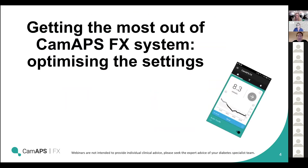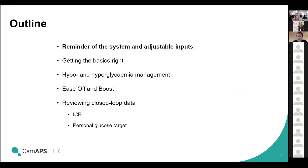For tonight's webinar we're looking at how to get the most out of the CAM APS FX system and closed loop systems, really looking at optimising settings. In the previous webinars we've looked at how it works and a bit of an introduction and really getting started on it — this is more about adjusting settings to really get the most out of the technology. Throughout the session this evening we'll go through a brief reminder of the system for those who haven't been able to attend our previous webinars.